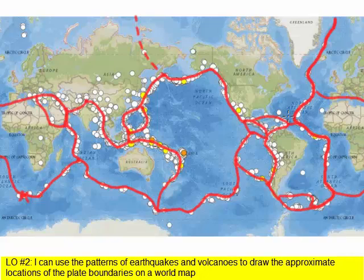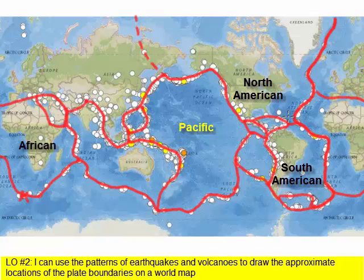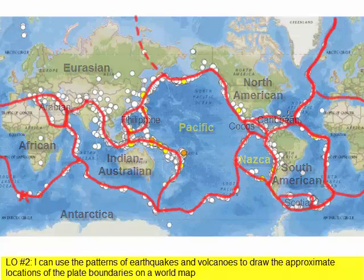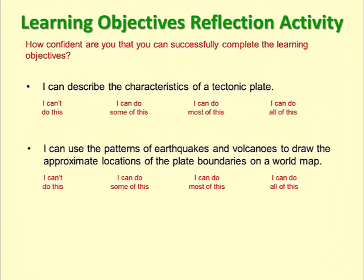Most plates are named for their most important geographic features, such as a continent or an ocean. We have the Pacific, North American, South American, African, Antarctic, Eurasian, and Indian-Australian plates, and the Nazca plate — those are the eight major ones. We can also identify a few smaller plates such as the Cocos, Caribbean, Scotia, Philippine, and Arabian plates. That brings us to the end of this lesson — how confident are you that you could successfully complete tasks associated with the two learning objectives?